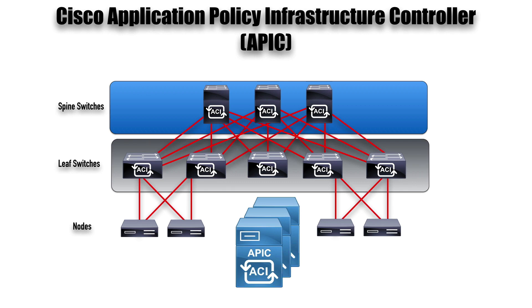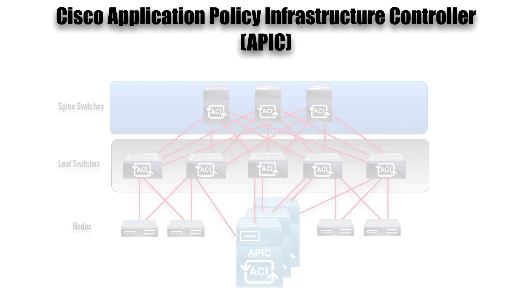Notice that there are three APICs on the screen. Cisco recommends that we never have fewer than three, and sometimes we want many more. We put those in a cluster and typically dual-attach them to our leaf switches for redundancy. These APIC SDN controllers can be used to monitor and manage the devices in the data center.